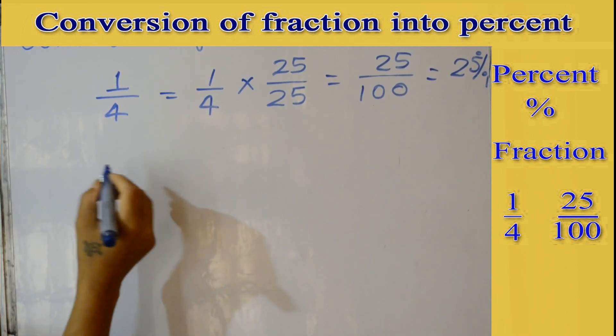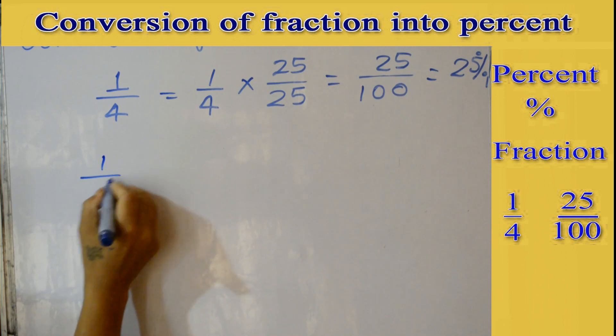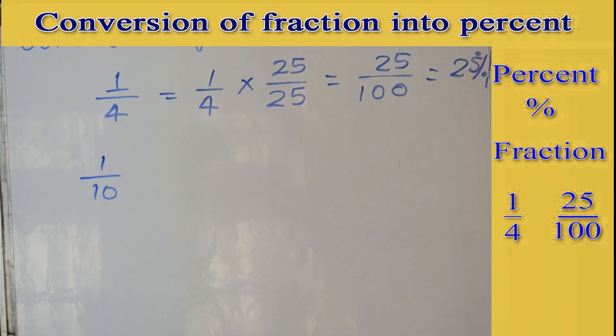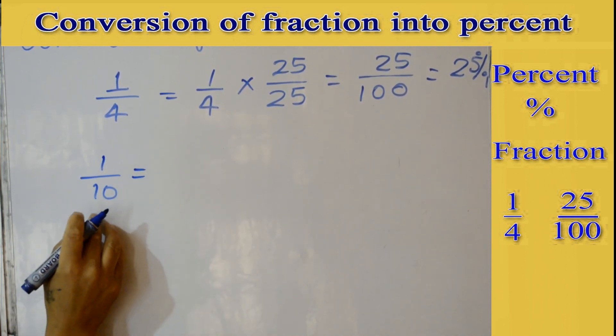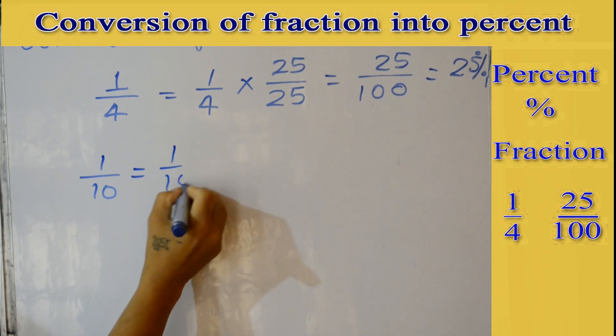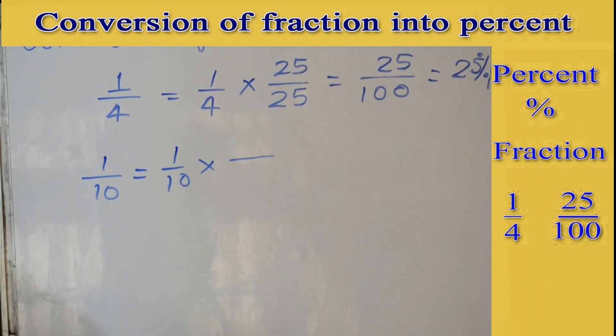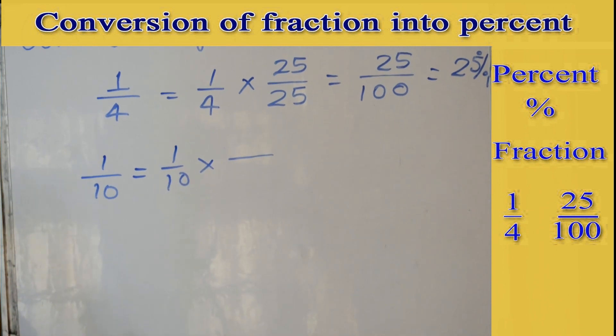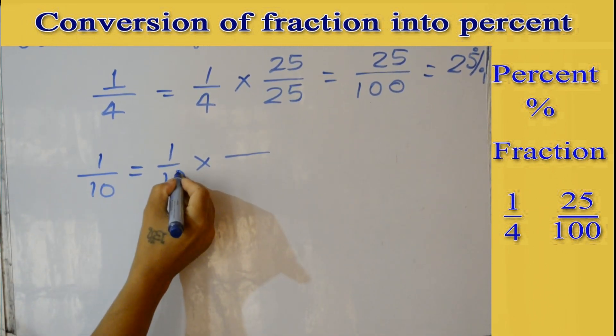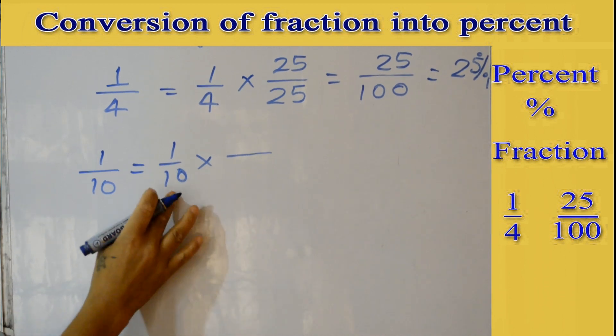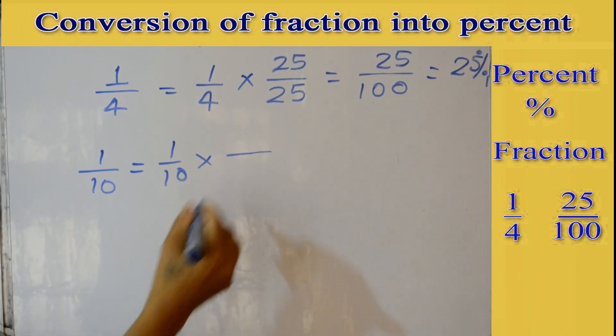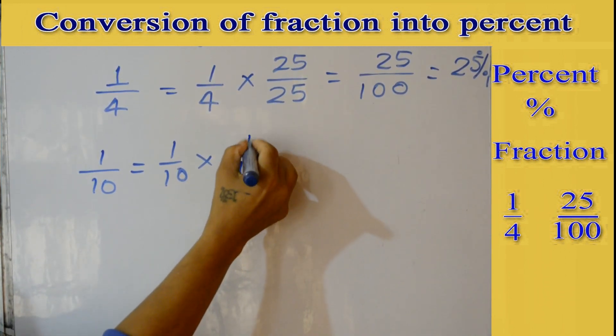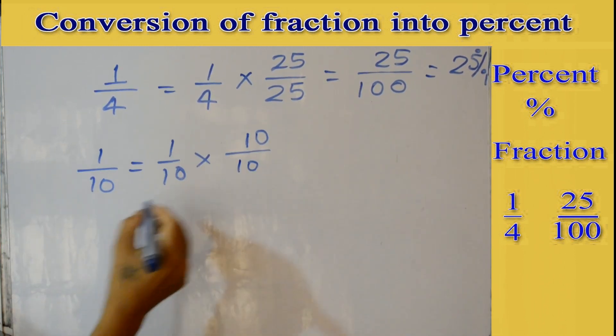Let's take another example: 1/10. Again, with 1/10 we have to multiply with the same number, denominator and numerator both. How can we get 100 by multiplying with this 10? That means 10 times 10 is 100, so numerator and denominator both we multiply with the same number, which is 10, giving us 10 out of 100.